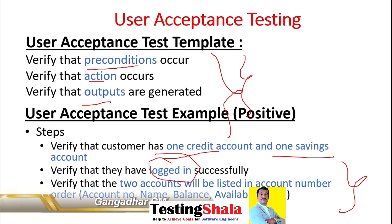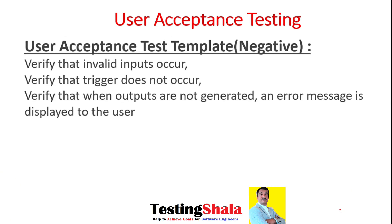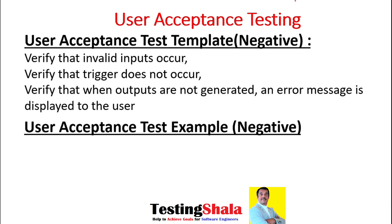Now I will write the negative test cases for the same acceptance criteria. Here, whatever the preconditions are, we are providing invalid inputs. When invalid inputs are provided, the trigger normally doesn't happen — meaning login does not happen.